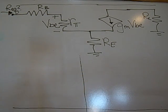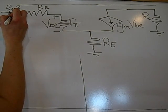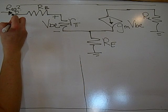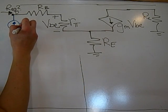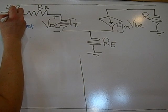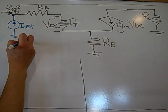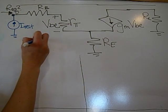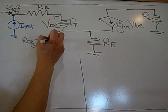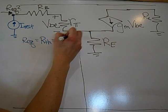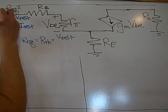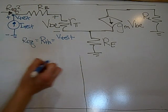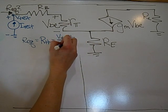So to do this, a test source is placed at the base here. I'm going to use a current source, I'm going to call it I-test. To find our equivalent, which will be the Thevenin equivalent, RTH, I need to find the voltage, V-test, which is this node, which will be the positive to ground over I-test.